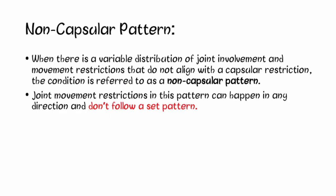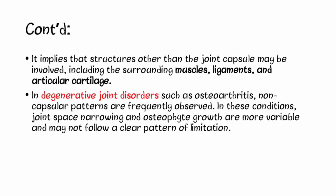Now let's move on to the non-capsular pattern. When there is a variable distribution of joint involvement and movement restrictions that do not align with the capsular restriction, the condition is referred to as a non-capsular pattern. Joint movement restrictions in this pattern can appear in any direction and don't follow a set pattern, implying that structures other than the joint capsule may be involved, including surrounding muscles, ligaments, and articular cartilage.